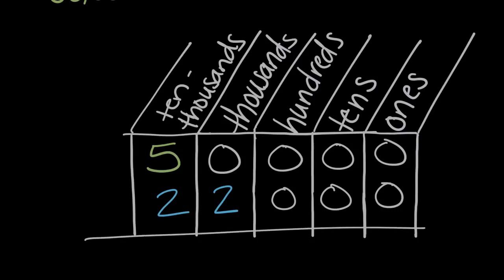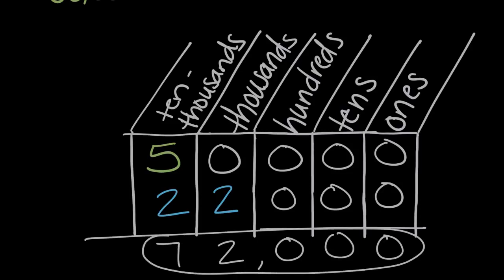And finally, when we combine these numbers, when we look at the place values, we now have seven ten thousands. We have two thousands, still no hundreds, no tens, and no ones. So our solution for five ten thousands plus 22 thousands is 72,000.